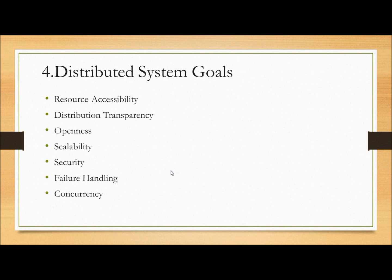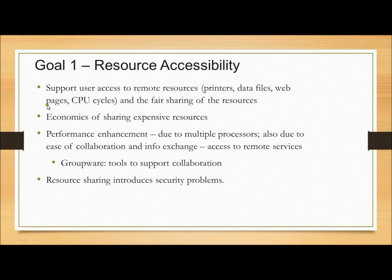Coming to the goals of implementing a distributed system: the main goals are resource accessibility, distribution transparency, openness, scalability, security, failure handling, and concurrency. Resource accessibility: it should support remote resources like printers, data files, CPU cycles, etc., even across multiple computers. There should be a scope for sharing resources — that is, group access.